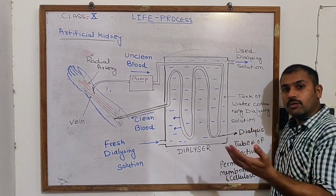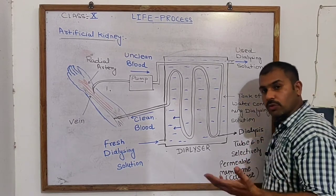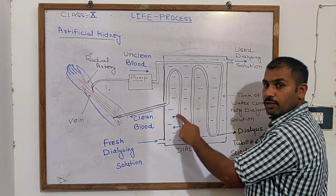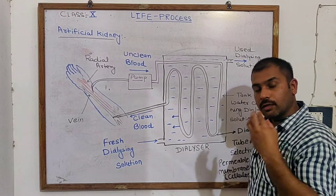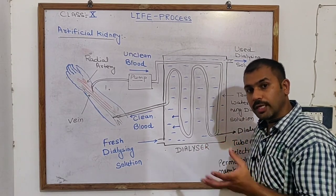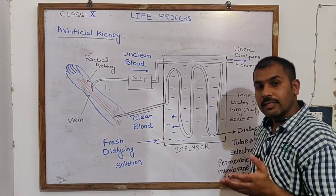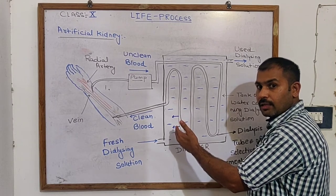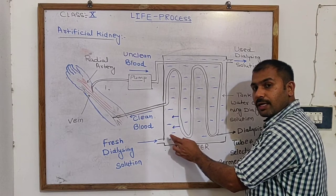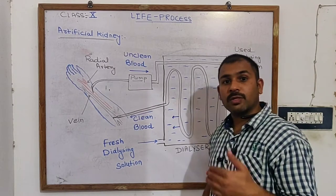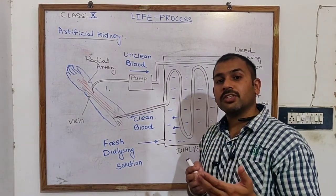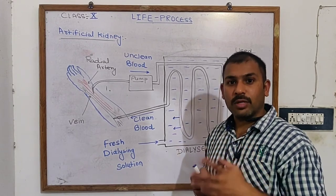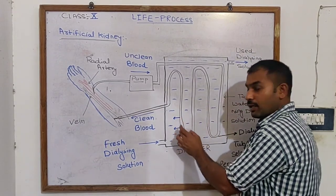We don't add urea to the dialyzing solution. In this solution, we add glucose and keep it isotonic to blood. Since blood has a higher concentration of urea, it diffuses out. Urea is a toxic product, and things present in high concentration in blood — like excess water, excess vitamins, excess minerals — all come out through this process.